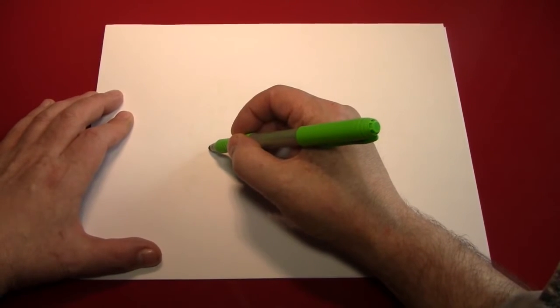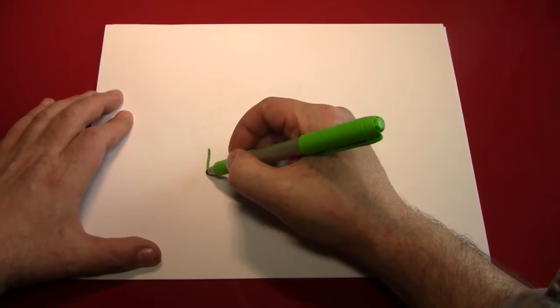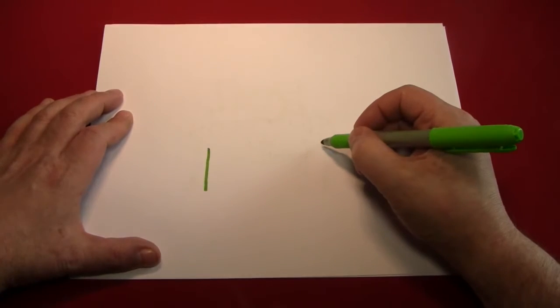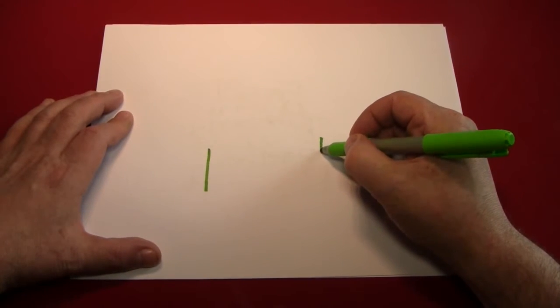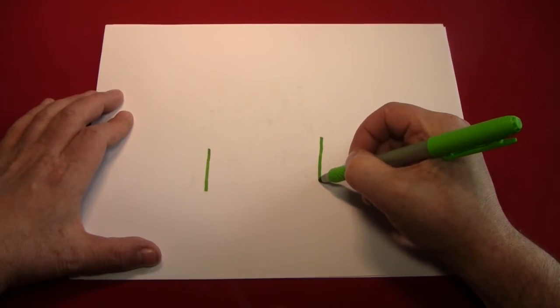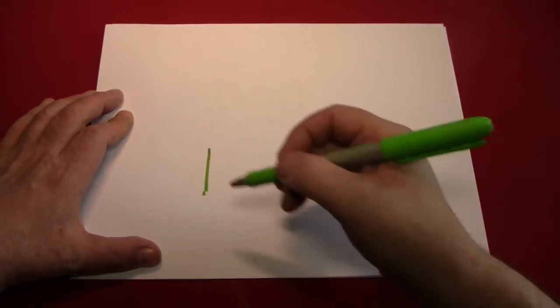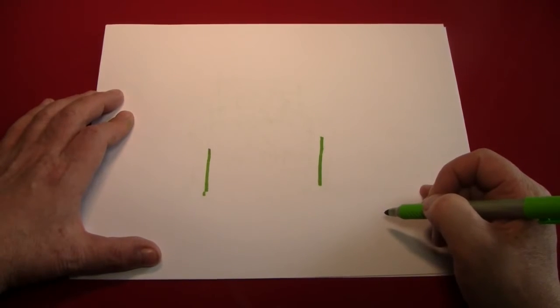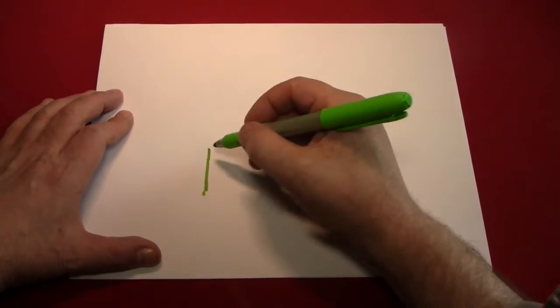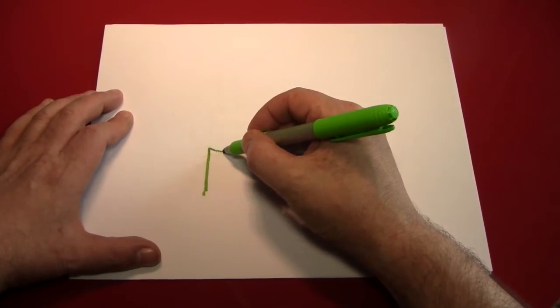I like to start drawing a wishing well by drawing the sides of the well itself. All I've done is just drawn two vertical lines that are up and down, and then I'm going to connect them with a bunch of lines that are kind of curved.